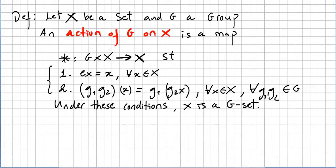Okay so if these two things happen under these conditions X is a G-set. So this is what we call an action of a group on a set. Or we say the group G acts on the set X. So we have a group action.